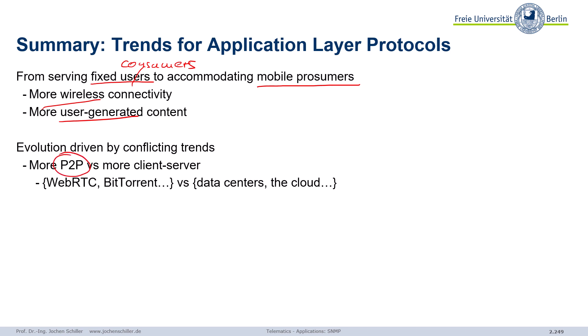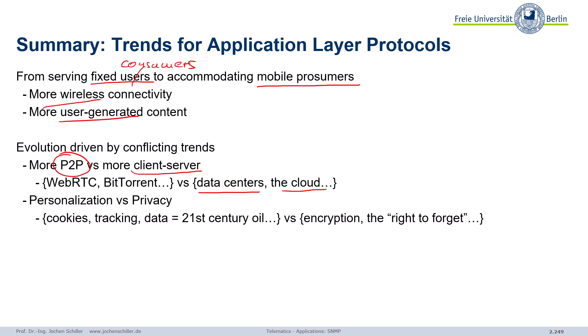We have several conflicting trends: peer-to-peer versus client-server — WebRTC is peer-to-peer, BitTorrent (we'll come back to this), but we also have huge data centers, cloud and edge computing. Then there's more and more personalization — we talked about cookies and tracking. Data is the 21st century oil; it's not really oil because you don't consume it, you can copy it as many times as you want. On the other hand, we have encryption and the right to forget. But think about blockchain technology — one of its characteristics is that you cannot change something in history, so it's an interesting legal discussion.